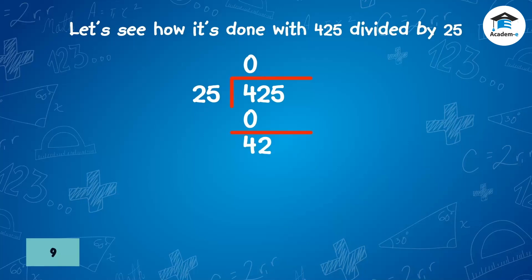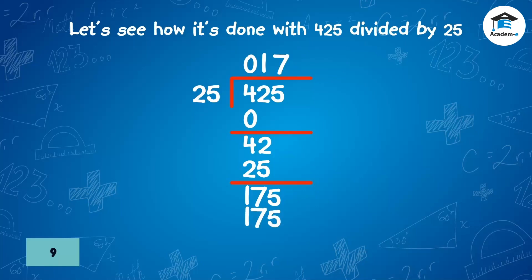Bring down the next digit of the dividend and divide this number by the divisor. The whole number result is placed at the top. The answer is multiplied by the divisor and the result is placed under the last number divided into. Subtract the bottom number from the top, bring down the next digit, and divide again by the divisor. Multiply by the divisor, place the result underneath, and subtract. There are no more digits to bring down. The quotient is 17.